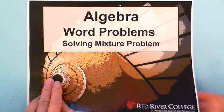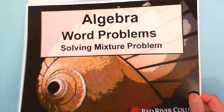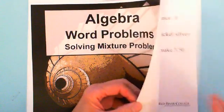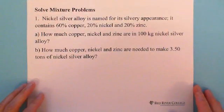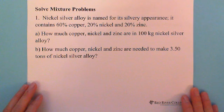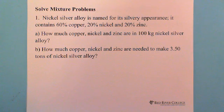There are two questions I want to show you how to solve mixture problems. The first one: nickel silver alloy is named for its silvery appearance. It contains 60% copper, 20% nickel, and 20% zinc. Question A: how much copper, nickel, and zinc are in 100 kg of nickel silver alloy?